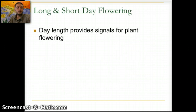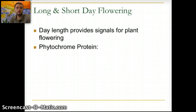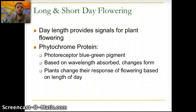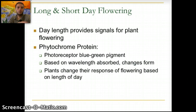The last topic we'll look at is the long and short day flowering process — what actually causes plants to flower. The length of the day produces signals that cause flowering, and this is driven primarily by a protein called the phytochrome protein. The phytochrome protein has a photoreceptor for a blue-green pigment, and the protein acts differently based on the wavelength of light absorbed, changing form based on wavelength absorbed and day length.